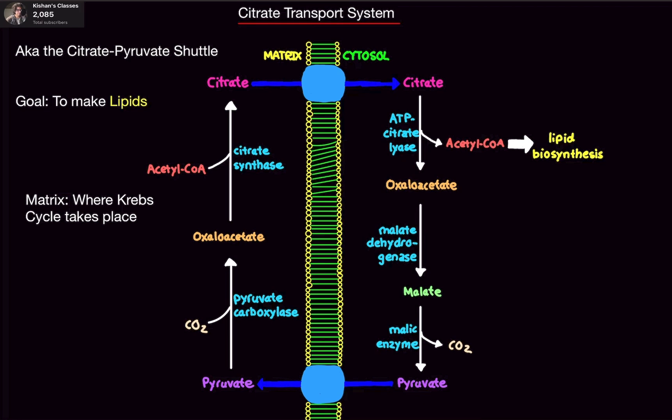So here we have the entire pathway here. You'll notice on the left-hand side is the mitochondrial matrix, and the right-hand side is the cytosol, divided right in half by the lipid bilayer. Lipid synthesis can only happen in the cytosol, not in the mitochondria. So we need to basically transport this stuff to the cytosol.